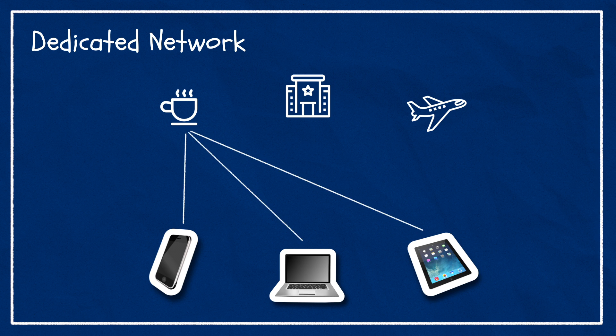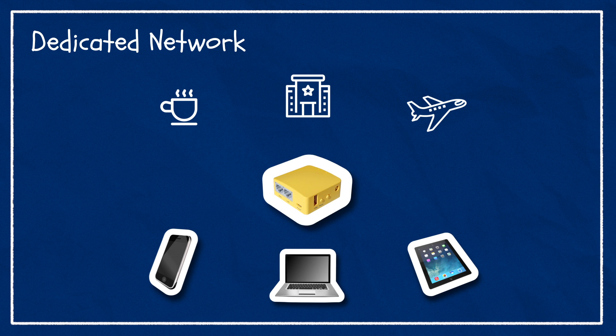To get rid of these problems I suggest option number three: a dedicated network. Having a dedicated router gives us a solid network for all our devices to connect to that we have complete control over. The only problem is that this brand new network won't have an internet connection. Thankfully there's a handy piece of equipment to solve this problem called a travel router. These small portable routers are designed to connect to the internet on one network — either ethernet, Wi-Fi, or USB tethering — and share that connection to its own network on ethernet and Wi-Fi. Normally the idea is that when you're travelling you only need to connect your devices to the travel router once, and as you travel you connect the router to whatever networks you have access to.